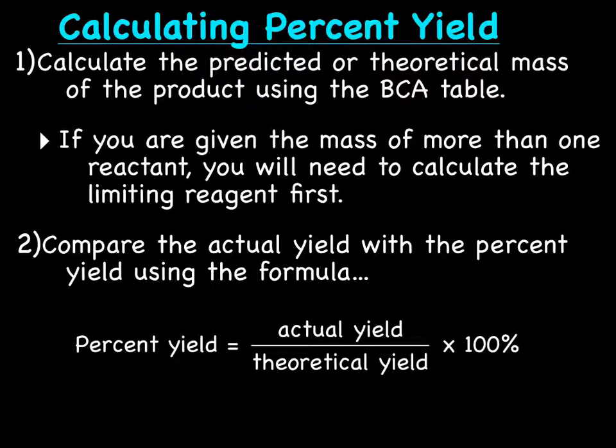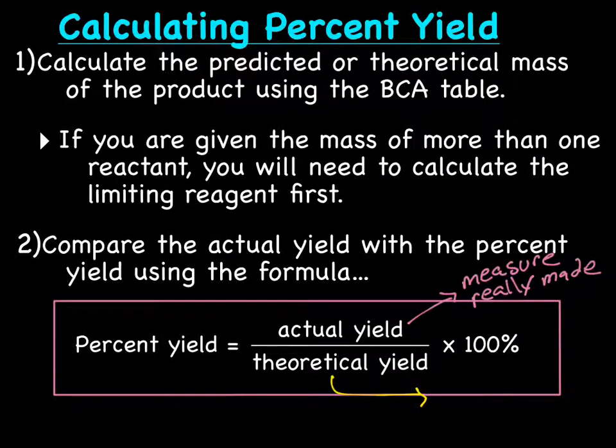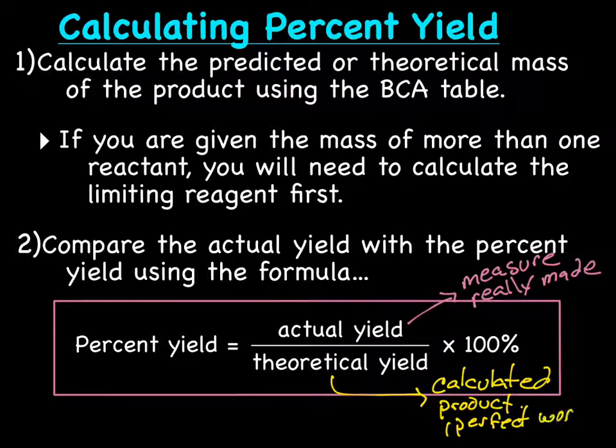Then what you're going to do is you're going to compare the actual yield with the percent yield using this handy dandy formula here, which is actually fairly easy. It's the actual yield divided by the theoretical yield times 100. And in case you forgot, the actual yield is the one that is actually measured in the laboratory, what was really made. And the theoretical yield is your calculated product. It's your calculated product, the perfect world.